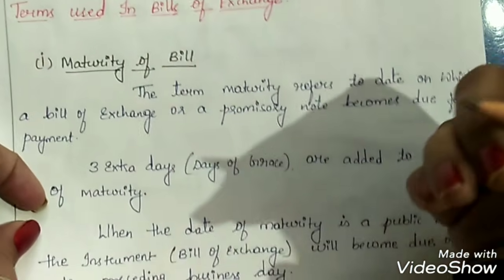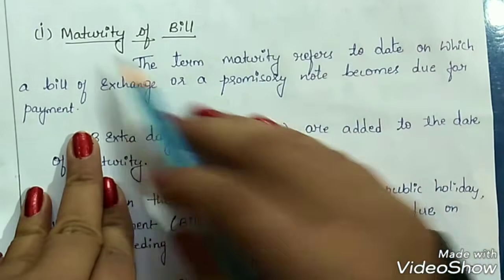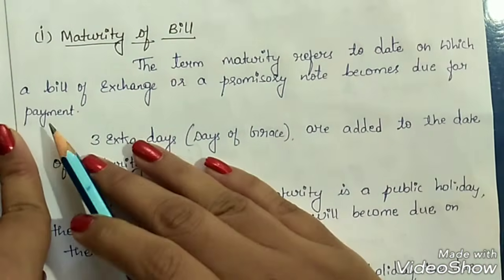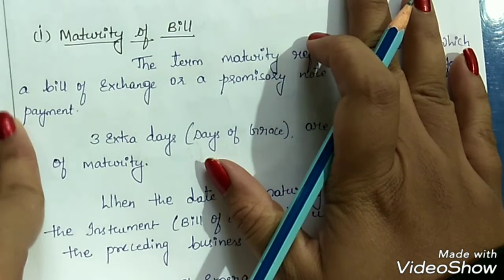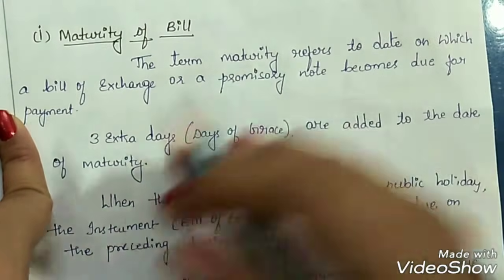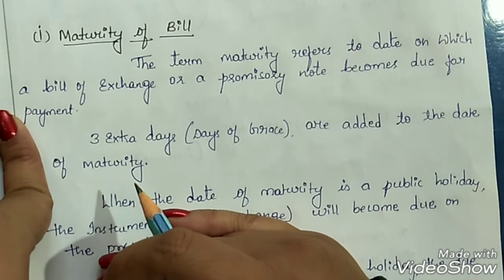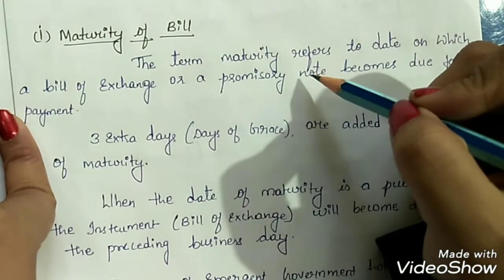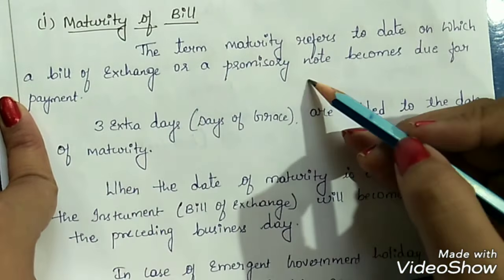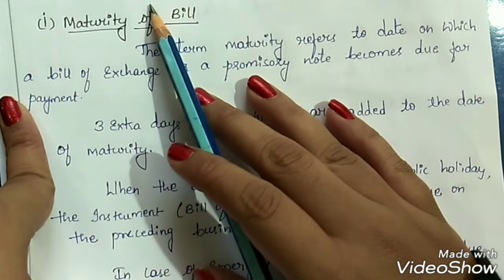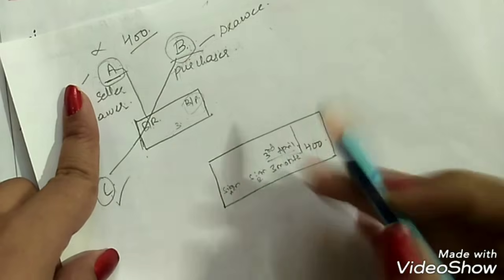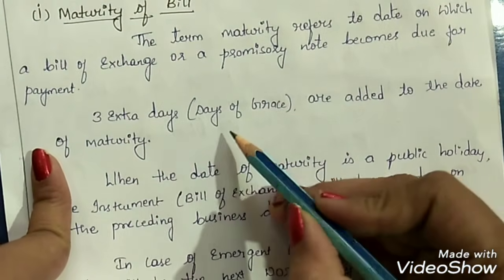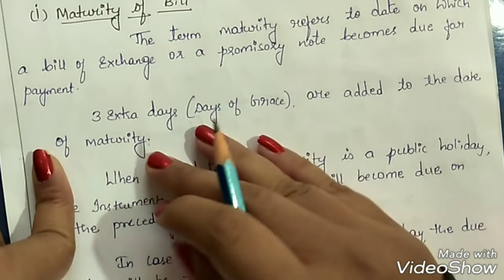Next are certain terms used in bills of exchange. The first is maturity of bill. Maturity refers to the date on which a bill of exchange or a promissory note becomes due for payment. A promissory note is also like a proof of credit sale but can be in oral format as well — when a person promises to pay a certain amount to another person, that is a promissory note. The date when it becomes due is called the maturity of the bill.